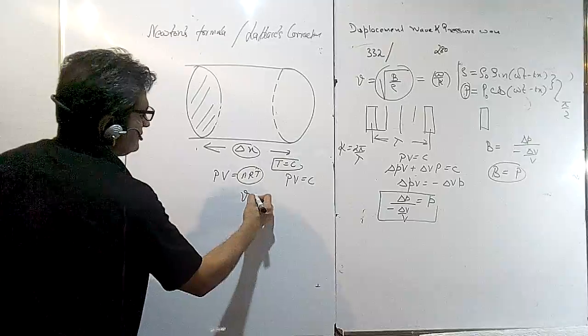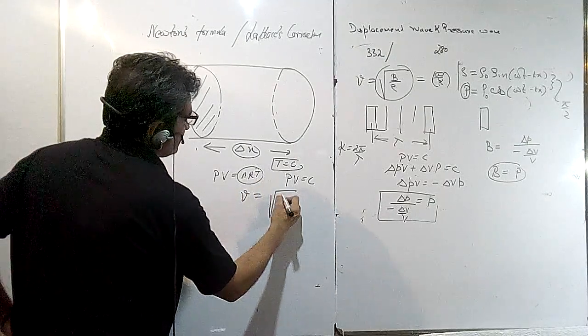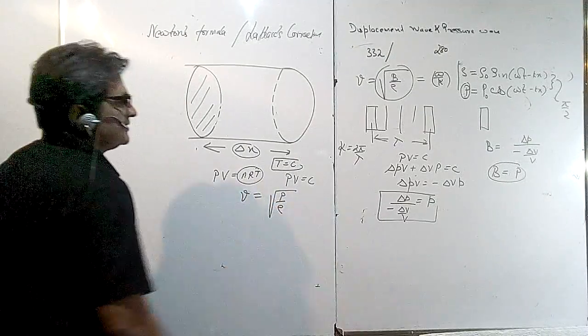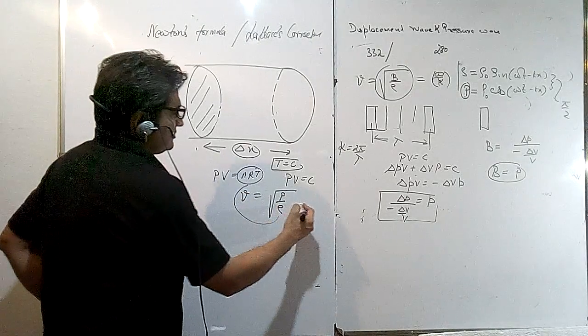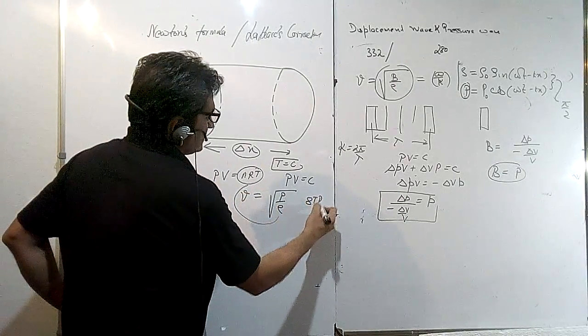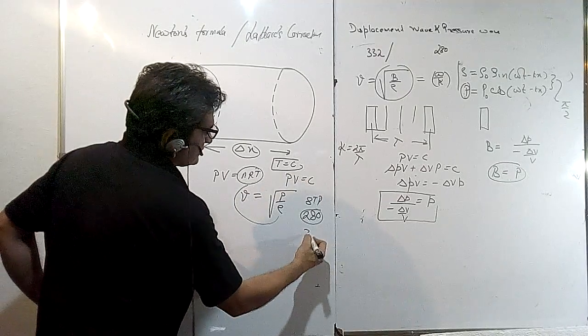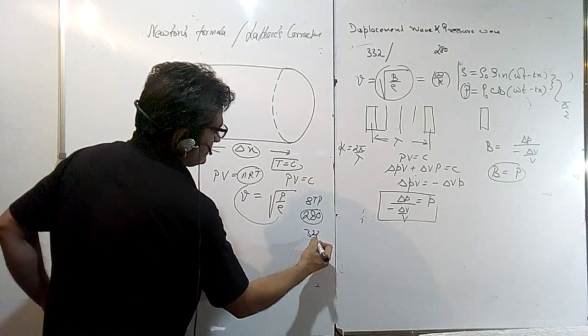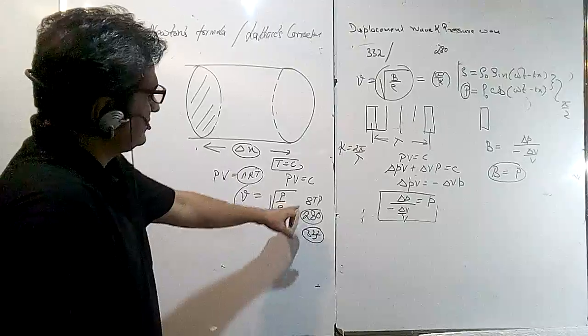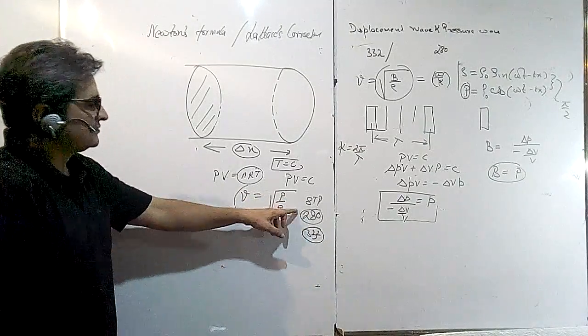So we get the speed of sound when Newton's formula is applied as P upon rho. But when this formula was applied, it was found that at STP the speed of sound comes as 280, which was less than 332, the actual value of the speed of sound at standard temperature and pressure. With this formula it is coming at 280, so there is some problem with this formula.